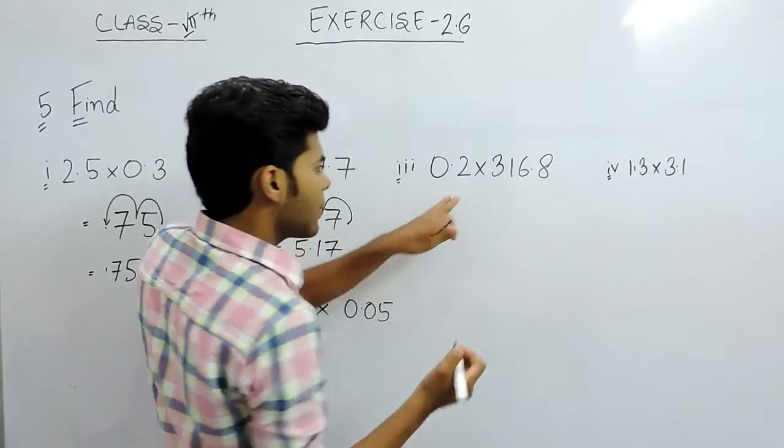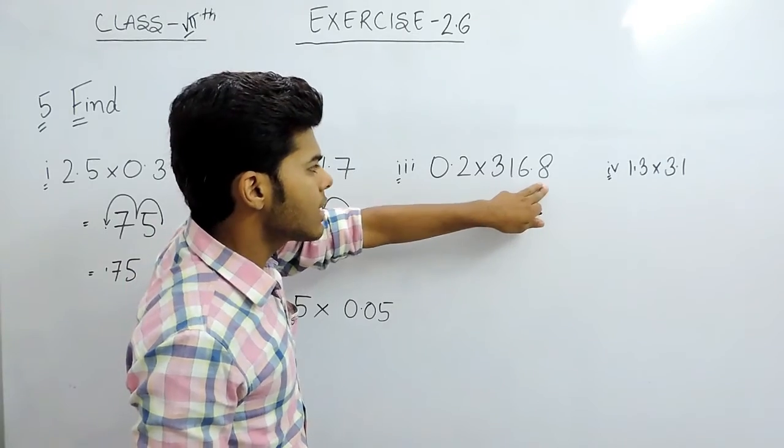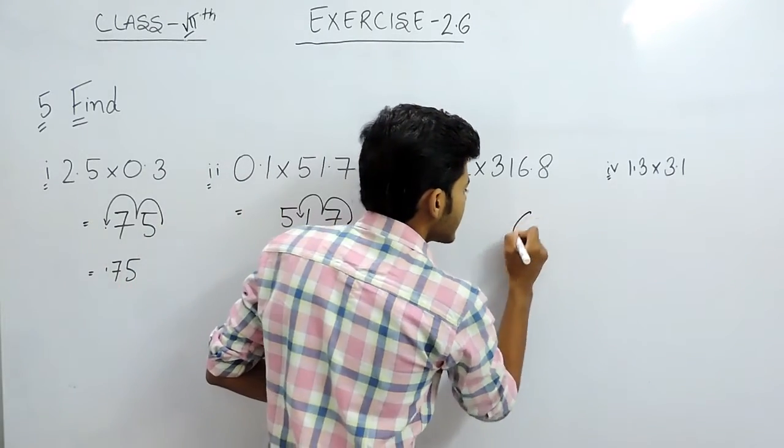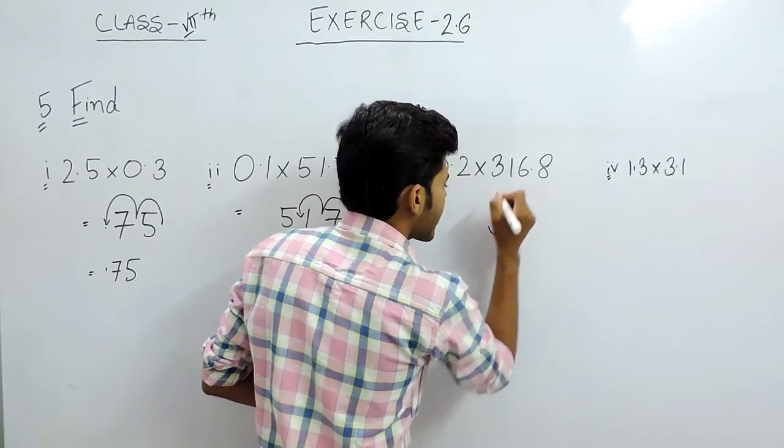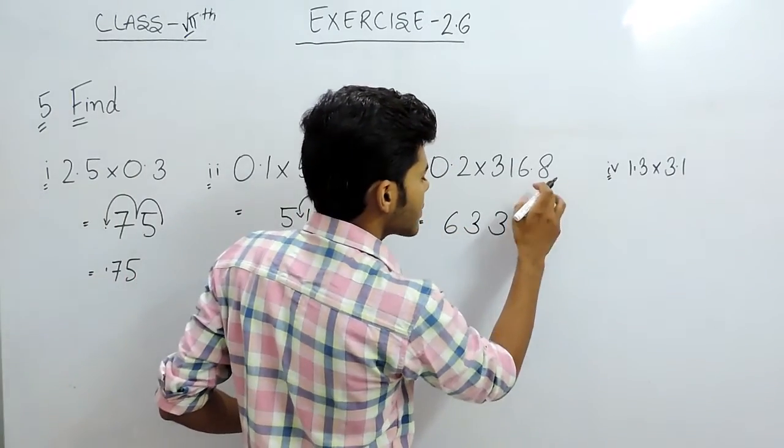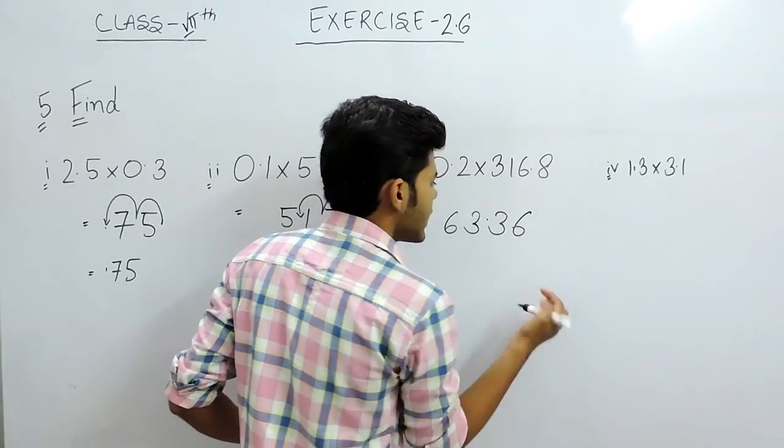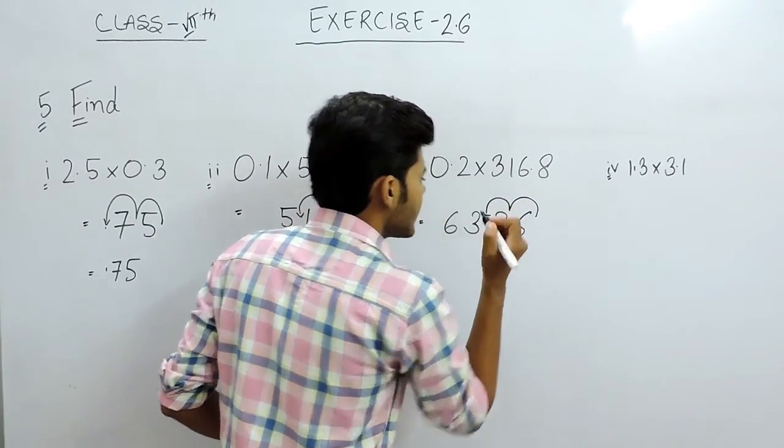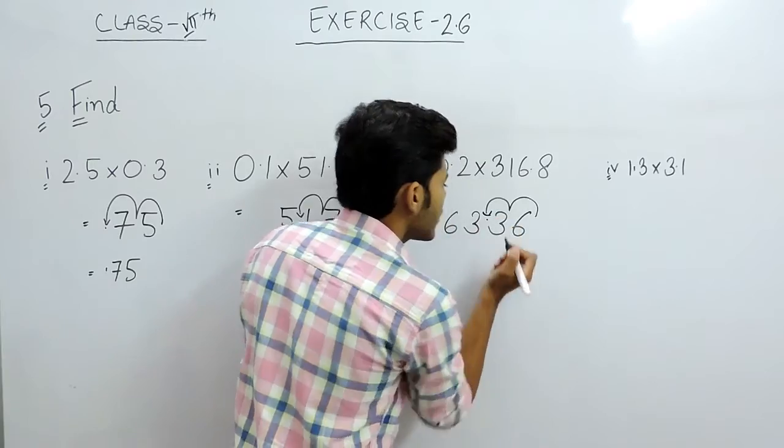Now this one, here we will multiply 2 with 3168. So it will be 6336 and the number of decimal points are 2. So the decimal will be put in the place just before 3.